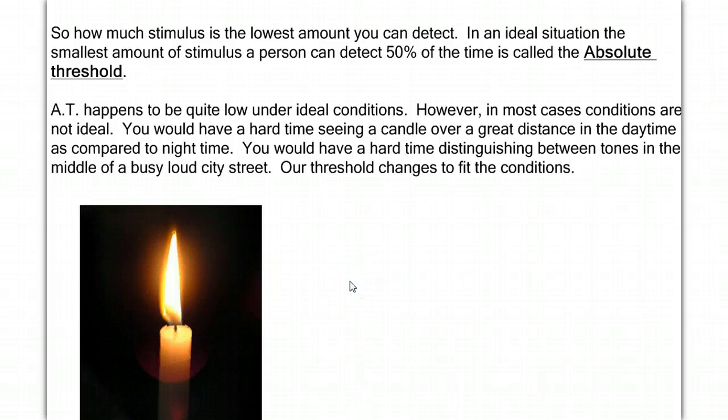Under ideal conditions, our absolute threshold is quite low. You could see a candle lit over a very great distance at nighttime as compared to the day. Here would be a little example. It's very easy to see this flame, but if I move it to a different background, it makes it more difficult to perceive. Same thing with sounds. If you're on a busy street corner, your ability to hear soft sounds is much less than if you're in the middle of the desert in the middle of the night with no other sounds around. You'll start to hear all kinds of things that you couldn't have heard on a busy street. Our threshold changes to fit the conditions.